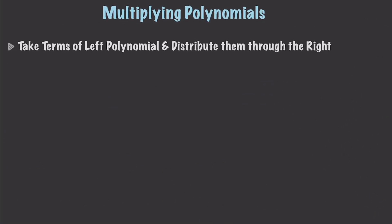I've already covered adding and subtracting polynomials. I called them equations or expressions at that point in time. So, I'd like to focus this time on multiplying polynomials. All you do when you multiply polynomials is you take terms of the left polynomial one at a time and distribute them through the right polynomial. I'm going to show you an example here.